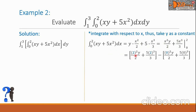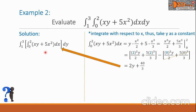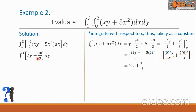Substituting the values, we have 2² times y over 2 plus 5 times 2³ over 3 for the first group, minus 0² times y over 2 plus 5 times 0³ over 3 for the second group. Because of the zeros, the second group comes down to 0 and we can cancel it. Simplifying the first group gives us 2y plus 40/3. Note that our answer is a function of y. We substitute this into the outer integral, giving us the definite integral from 1 to 3 of (2y + 40/3) dy.